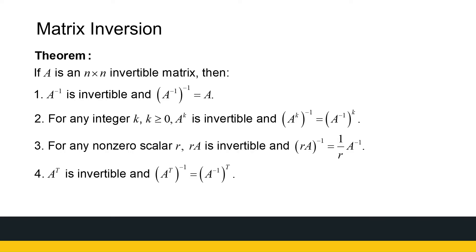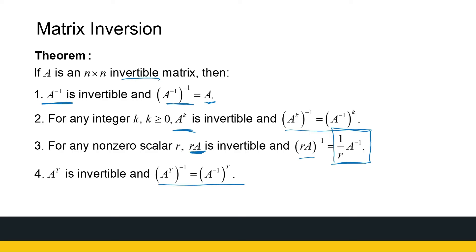More theorems linked to inverses: if A is an n by n invertible matrix, firstly A inverse is also invertible, and the inverse of A inverse gives back the original matrix A. For any integer k, A to the power k is invertible, and we find its inverse accordingly. If I look at a scalar multiple of A, that scalar multiple is also invertible, and this is how I find that inverse. And A transpose is also invertible, and this is how I find the inverse of A transposed.